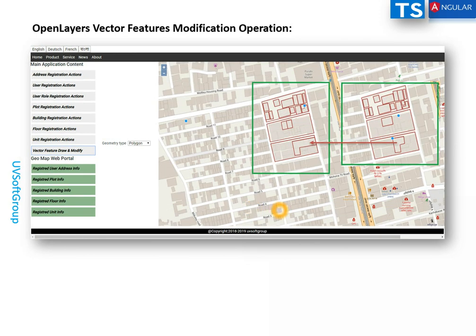Here is an example screen showing the old state of the geometry — that's what I call 'vector features draw and modify.' You can see the old state of the geometry. The actual geometry may need to be changed or modified, and the tools allow you to do that. The written functions work.